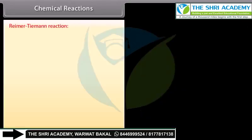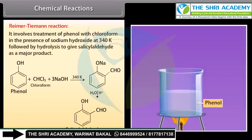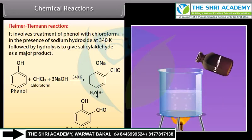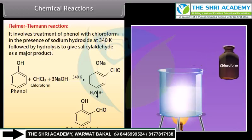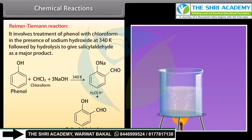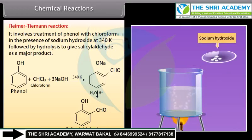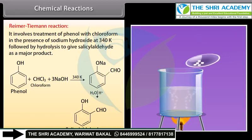Reimer-Tiemann reaction: It involves treatment of phenol with chloroform in the presence of sodium hydroxide at 340 Kelvin, followed by hydrolysis to give salicylaldehyde as a major product.